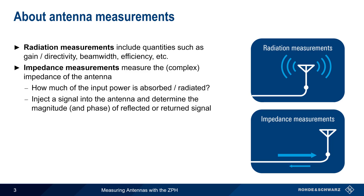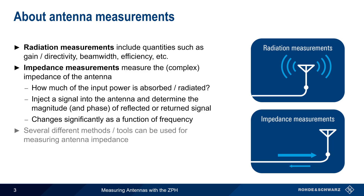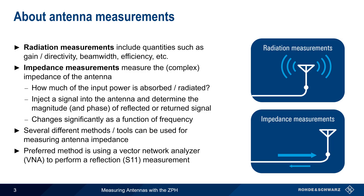This is done by injecting a signal into an antenna, and then measuring the magnitude and phase of the signal reflected or returned from the antenna. This will change, often substantially, as a function of frequency. There are several different methods or tools that can be used for measuring antenna impedance, but the preferred method is using a vector network analyzer to perform a reflection or S11 measurement, and this is the method used by the ZPH.